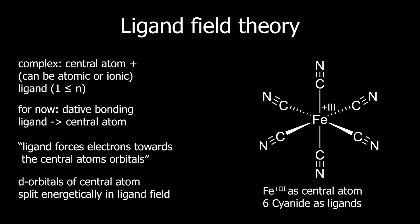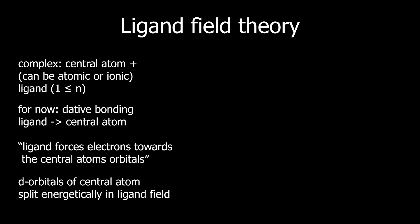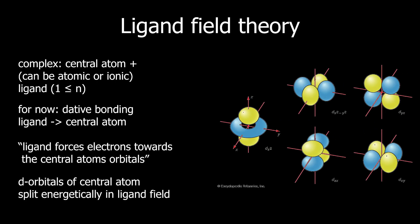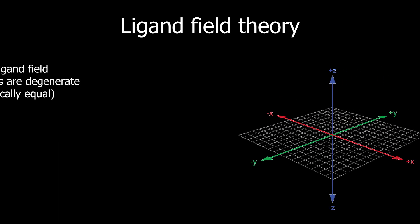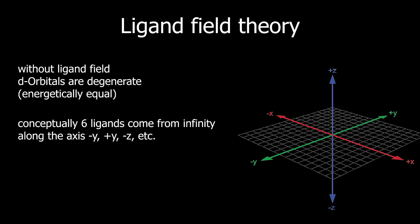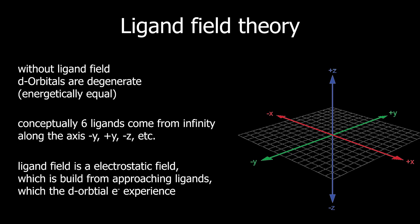For the d-block element, these are diffuse orbitals, meaning they extend far into space from the nucleus. When ligands approach the central atom from, let's say, infinity, conceptually, the d-electrons feel their presence first. Due to the repulsive force of the ligand's electrons, the d-electrons experience different energy levels depending on the coordination geometry.